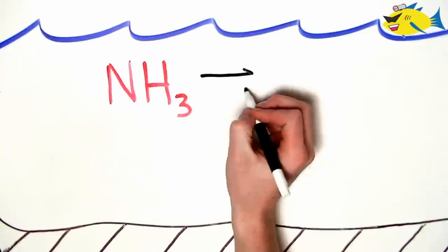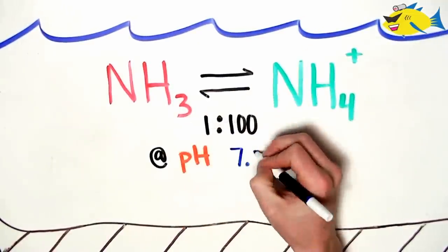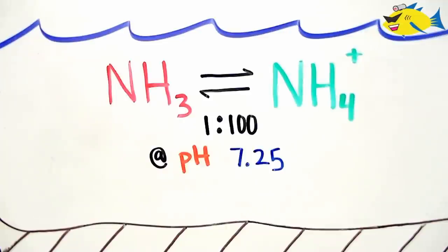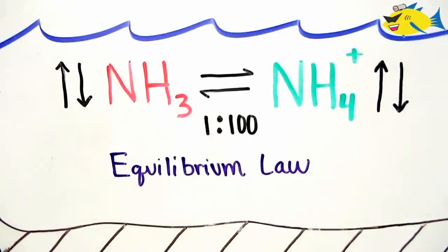Another key feature of these two forms of nitrogen is that they exist in a constant equilibrium with one another, meaning that if our pH remains stable, the ratio between them won't change even if one form is increased or decreased. This is called Le Chatelier's principle, or the equilibrium law.